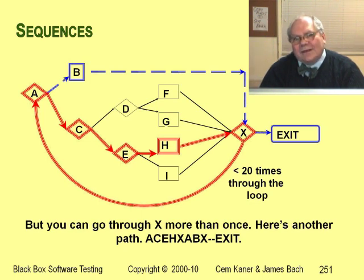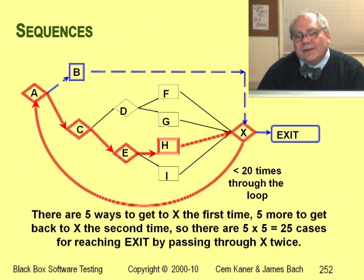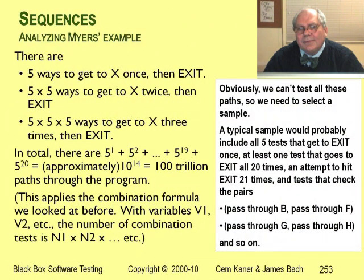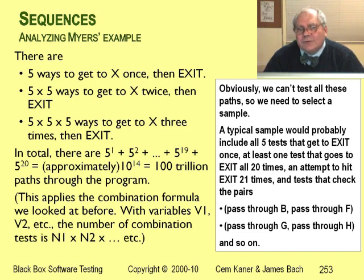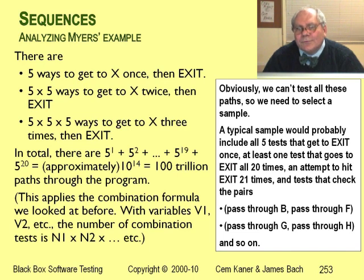But you don't have to exit the first time you hit X — you can go back to A and come back to X up to 20 times. One path goes from A to C to E to H to X, then back to A and to B to X and exit. This is one of 25 paths in which we exit the second time we hit X. We can count up possible paths using the combination rule. V1 holds the path from A to X the first time (five values), V2 the second time (five values), and so on up to 20. If we go through three times, N1 times N2 times N3 is about 100 trillion paths — and this is a trivially simple program with one entry, one exit, and only one loop.